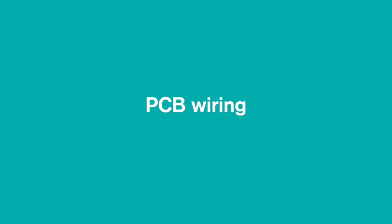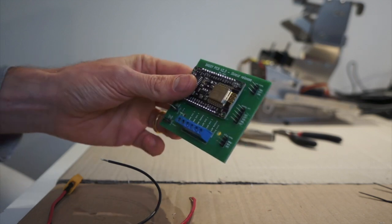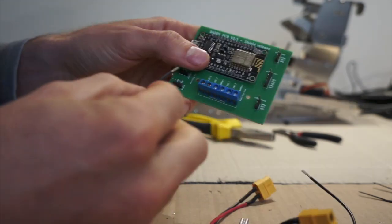PCB wiring. Well this is how the V2 PCB shield version looks like.